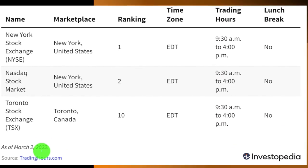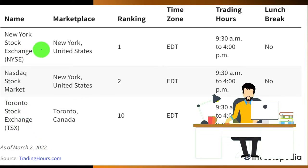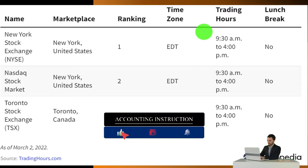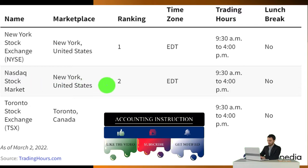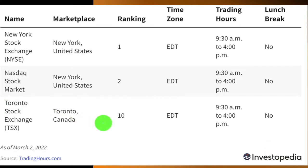Looking at a table of major North American exchanges: the New York Stock Exchange (NYSE), ranked number one, is in New York, United States, in the Eastern Time Zone, trading hours 9:30 a.m. to 4 p.m., with no lunch break. The NASDAQ Stock Exchange, also in New York, ranked number two, operates the same hours — 9:30 a.m. to 4 p.m. with no lunch break. The Toronto Stock Exchange, Toronto, Canada, ranked number ten, also in the Eastern Time Zone, trades 9:30 a.m. to 4 p.m. with no lunch break.